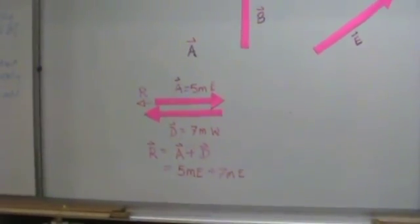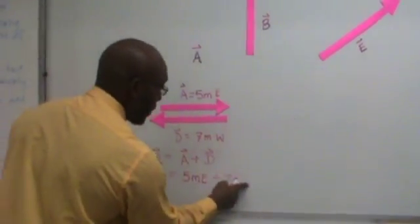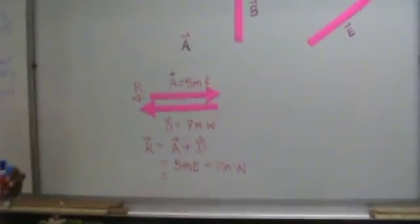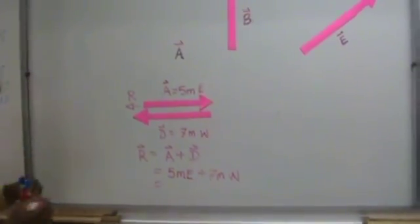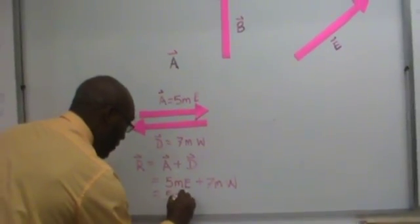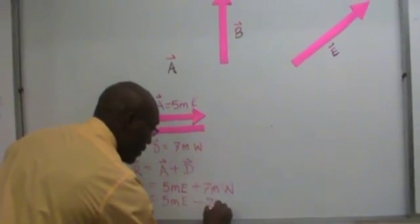I'm going to have to do a little bit of manipulation here now. Now actually, this is supposed to be west. Well, you can't add east and west like that. So what we're going to have to do, we're going to have to make this 5 meters east minus 7 meters east.